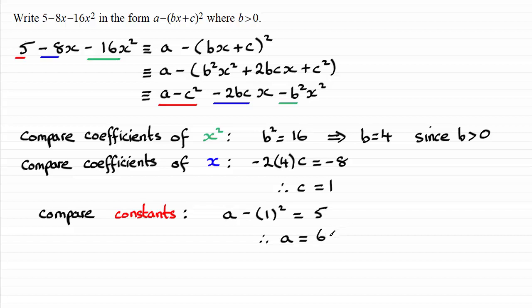And now that I've got a, b, and c, I can substitute them back up into here, and we can conclude then that 5 minus 8x minus 16x squared is identical to 6 minus (4x plus 1) all squared.